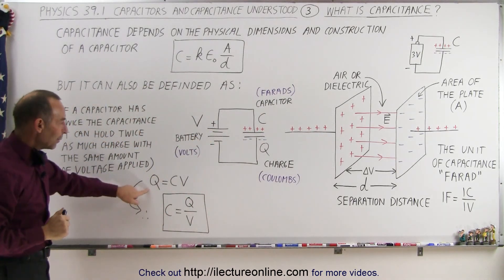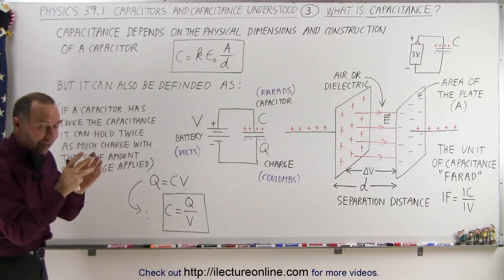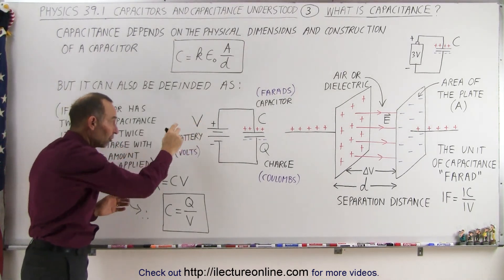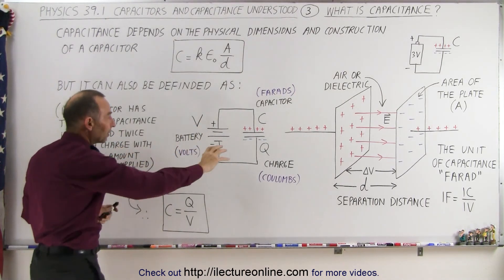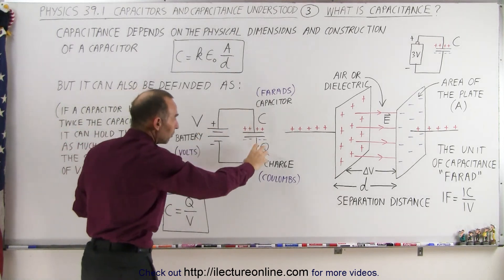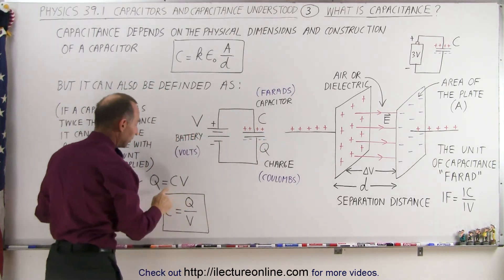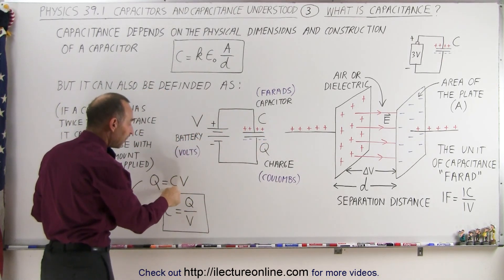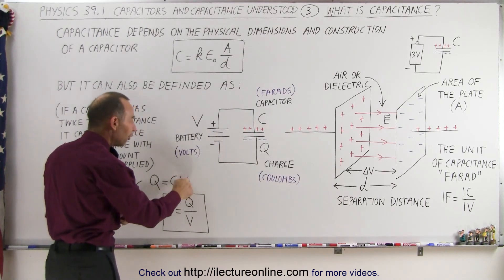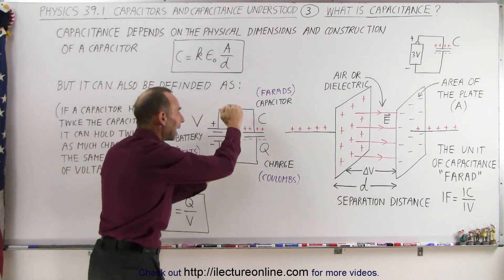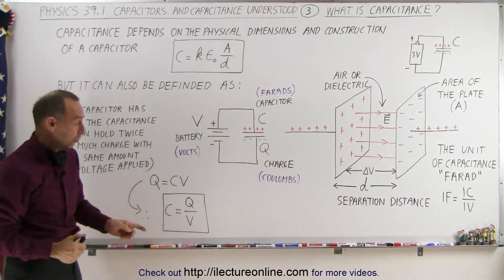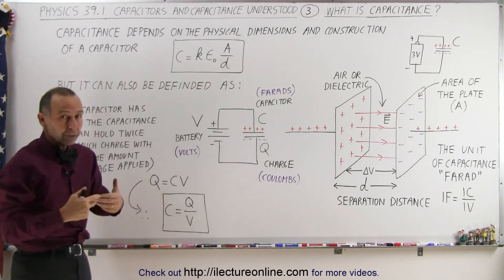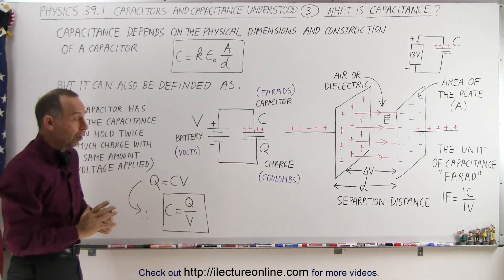When a capacitor is attached to a voltage supply or battery, the amount of charge that will be pushed onto the capacitor is equal to the size of its capacitance times the voltage applied to that capacitor. In other words, if you double the voltage, you'll double the amount of charge onto that capacitor.